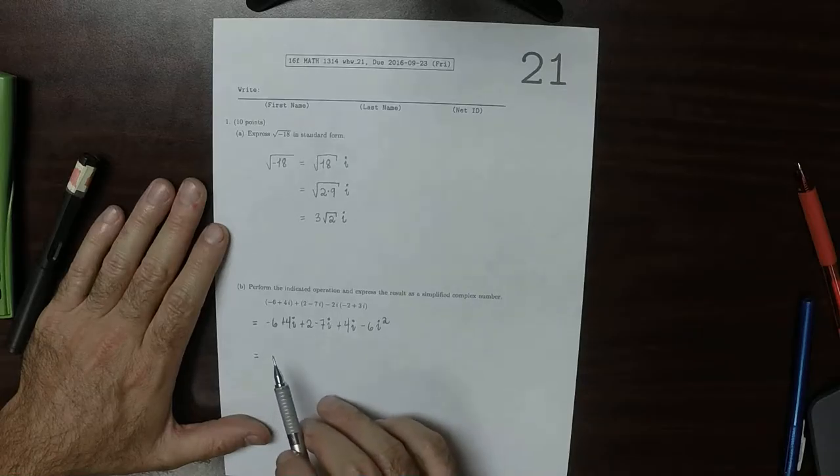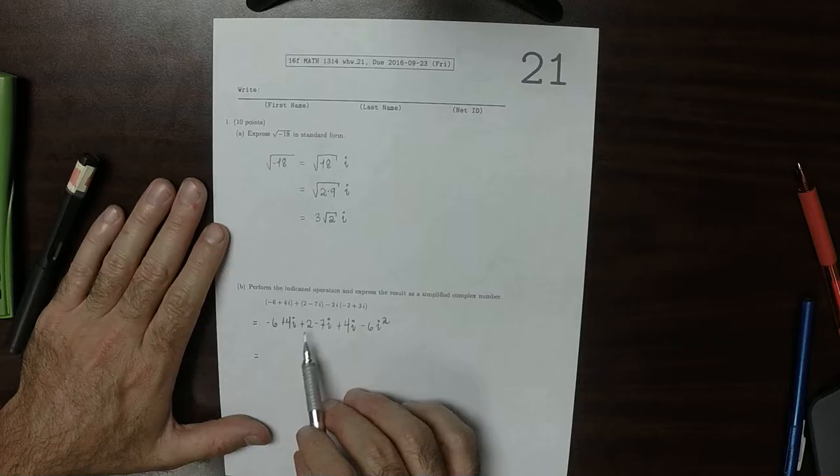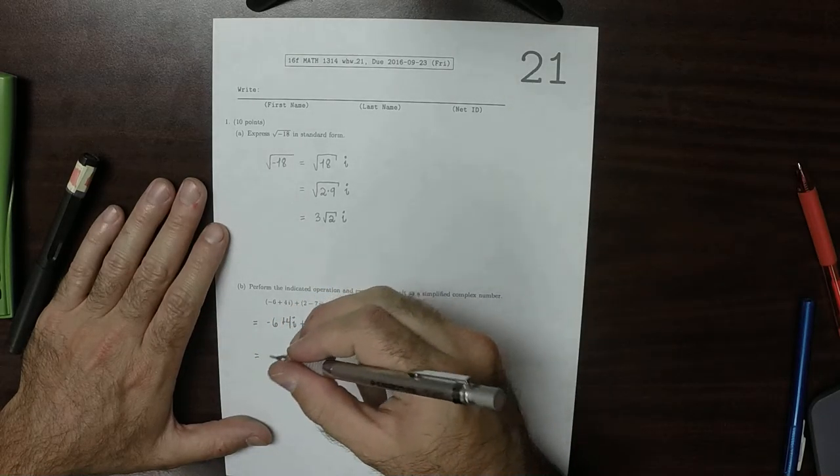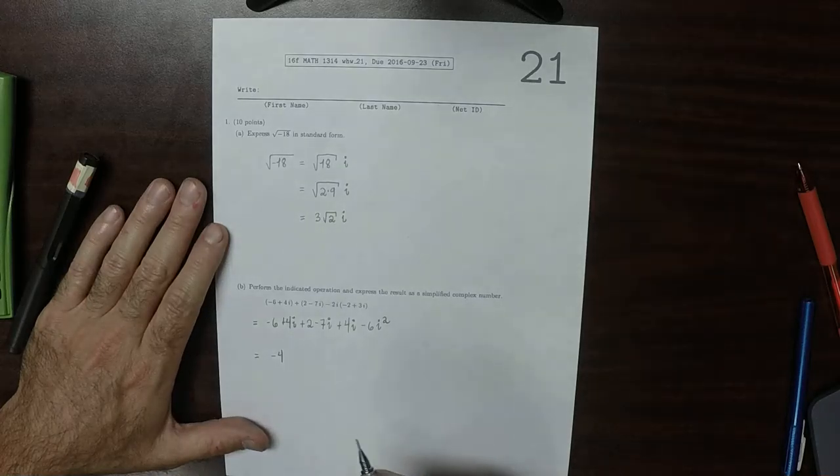Okay, then collecting the units, I see negative 6 plus 2. So that would be negative 4. So collecting those units.